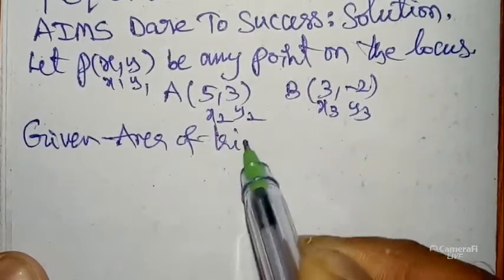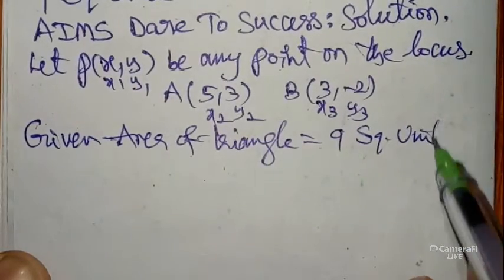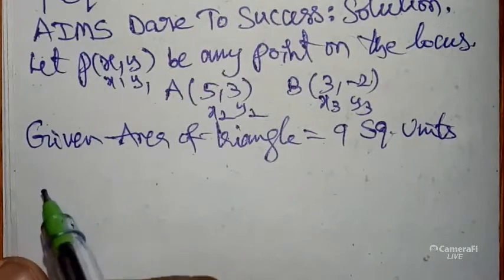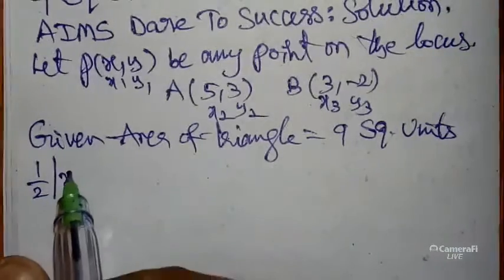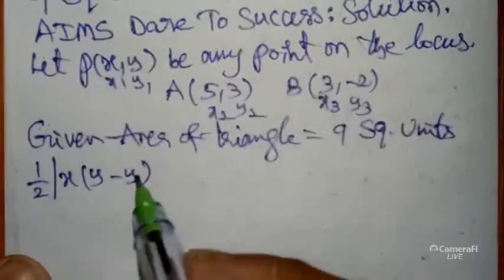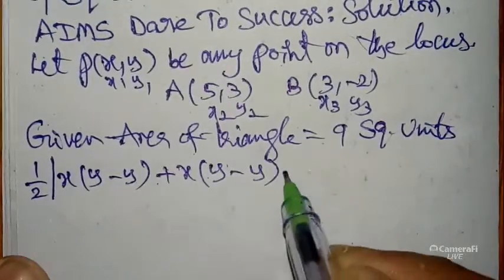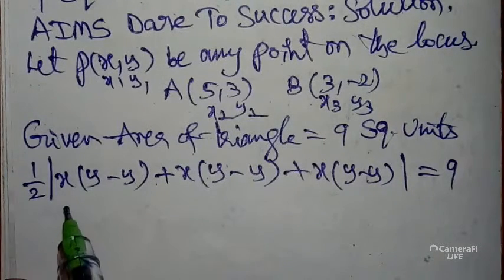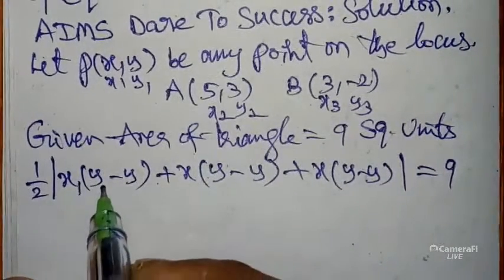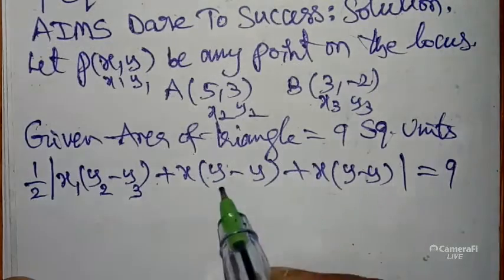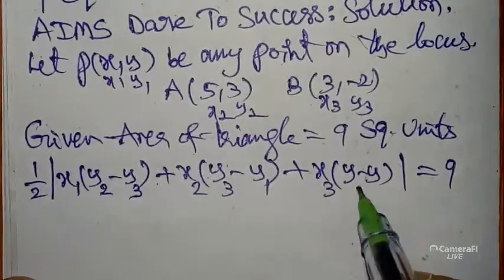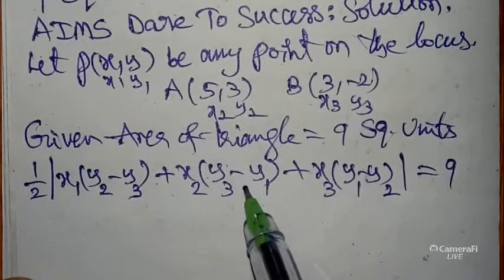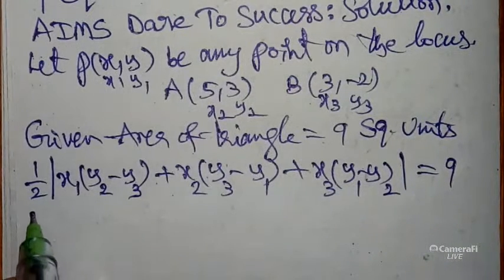Given: area of triangle equals 9 square units. The area of triangle formula is: (1/2) |x1(y2 - y3) + x2(y3 - y1) + x3(y1 - y2)| = 9. Substituting: x1 = x, y1 = y, x2 = 5, y2 = 3, x3 = 3, y3 = -2.